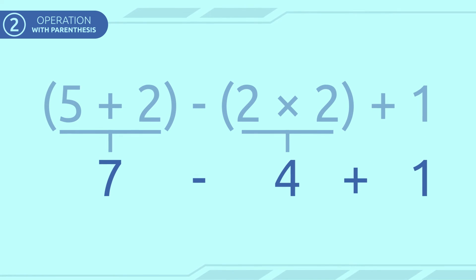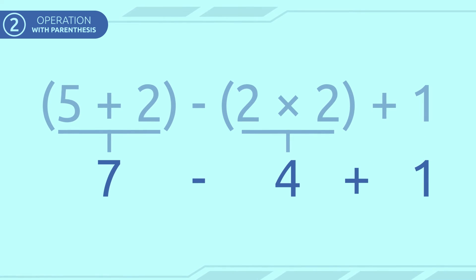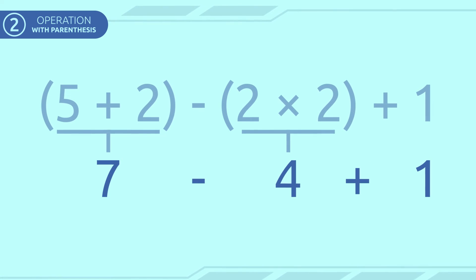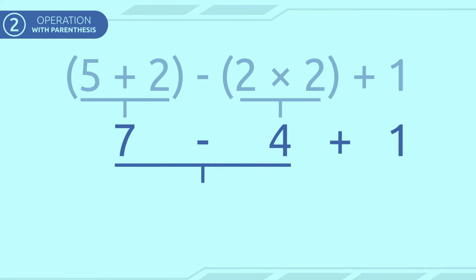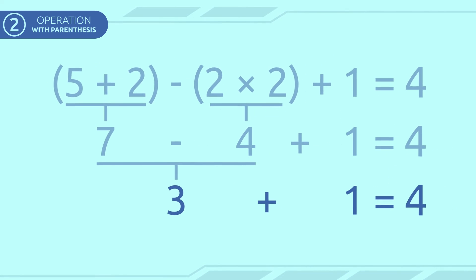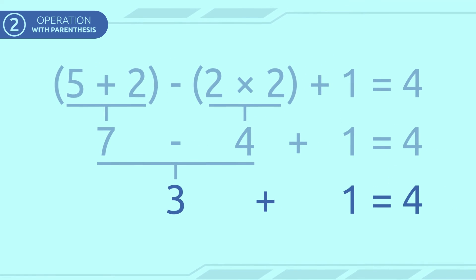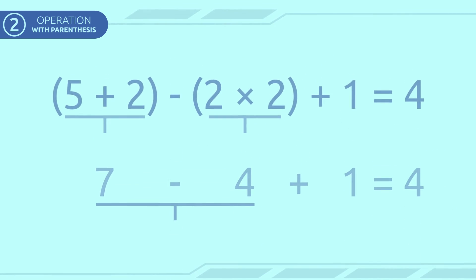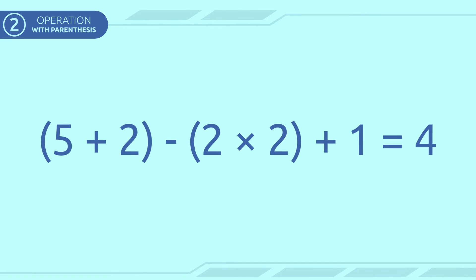Finally, we'll solve the additions and subtractions in the order in that they appear. Seven minus four equals three. And three plus one equals four. The answer is four. Simple, isn't it?